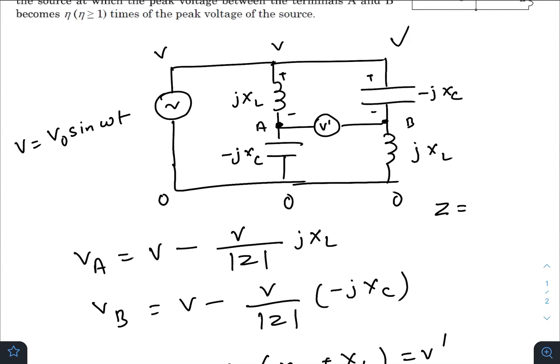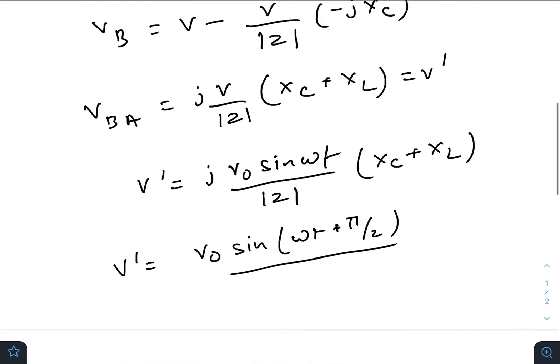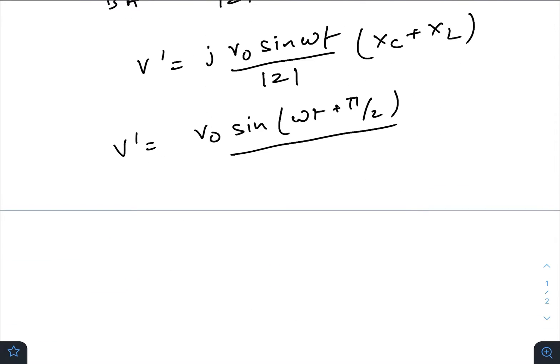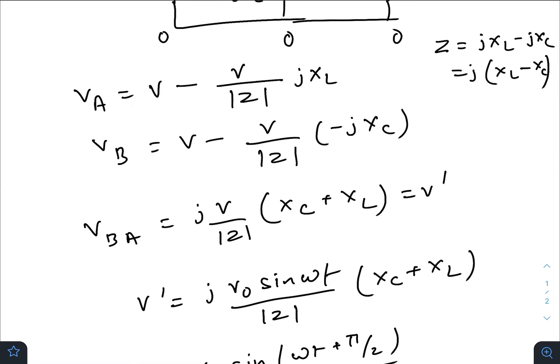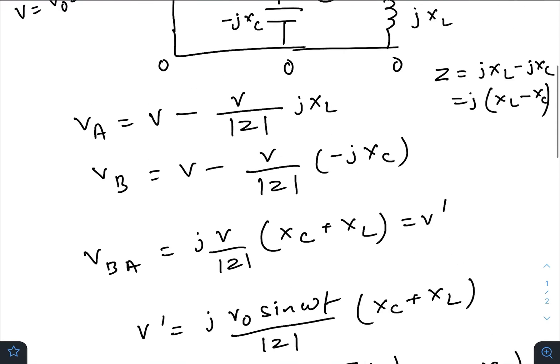Z equals j(XL - XC). Now it totally depends—basically there will be two situations where XL will be greater than XC in one situation, and in the other one, XC will be greater than XL. So we will basically have two values of source frequency which satisfy the given condition in the question.